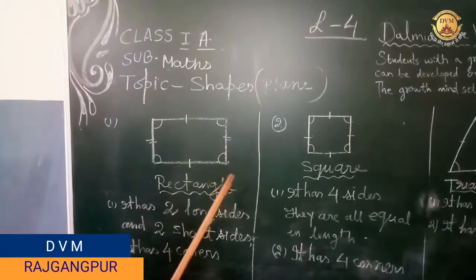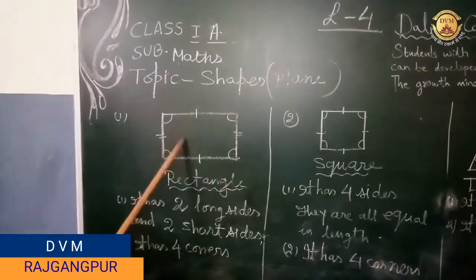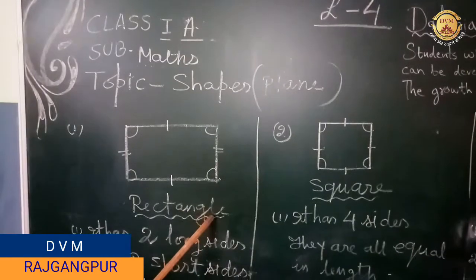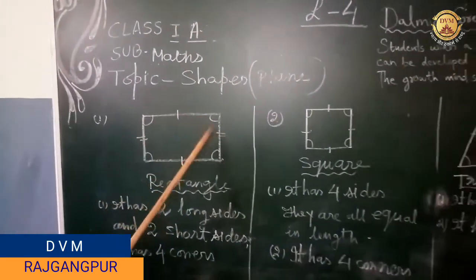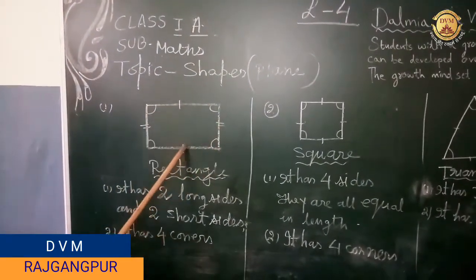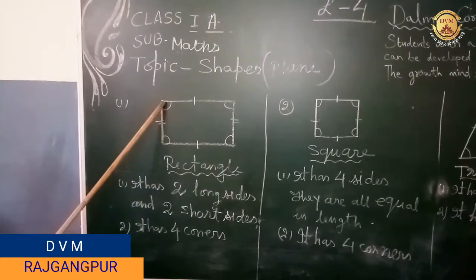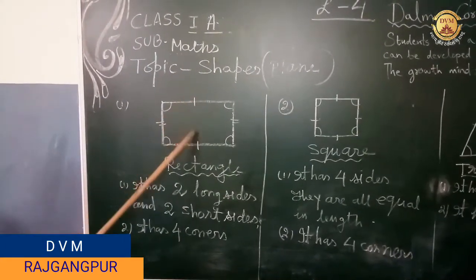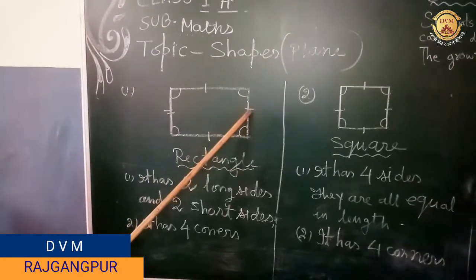Look at the first shape. This is known as rectangle. Rectangle has 4 sides: 1, 2, 3, 4. You can see 2 long sides and 2 short sides.